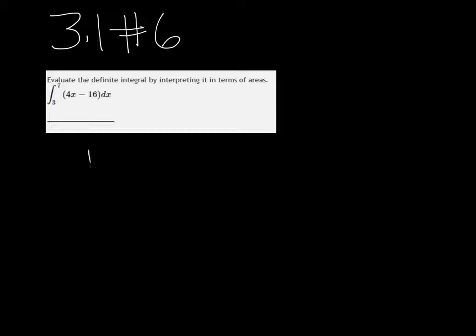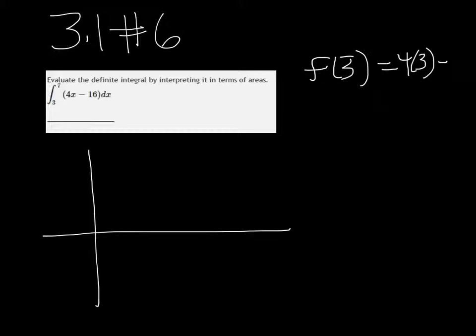So it helps to get a picture of this. And really we just need the endpoints to get an idea. So if we plug in 3, we're going to get 4 times 3 minus 16, which is negative 4. So 1, 2, 3, 1, 2, 3, 4. Negative 4 is our left-hand endpoint.